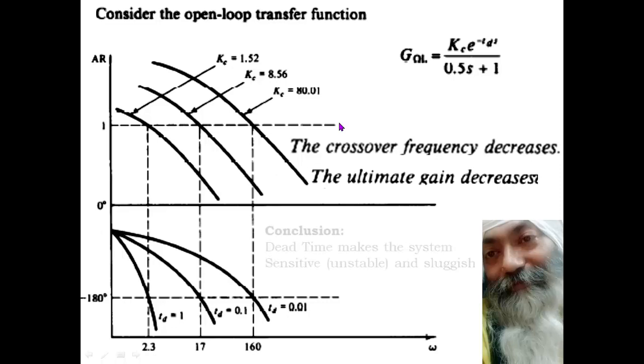And we conclude finally that dead time is something not very, very good—something which makes the system sensitive. It makes the system unstable the moment we apply any kind of control over it. And in case of large dead time, the system tends to become sluggish because we cannot make use of a high value of gain in case of any kind of P or PI or PID controller. So the nutshell is that dead time elements are not good and we have to deal with these kind of things.